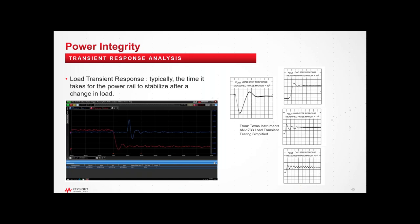Transient response is another related measurement. Hook up a voltage probe, apply a step load, and observe how fast the supply recovers. With about 50 degrees of phase margin, recovery looks clean. With something like 5 degrees of margin, the supply rings for a long time — illustrating why good phase margin is important and providing another measure of transient response quality.